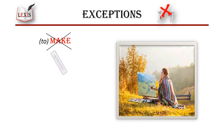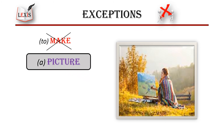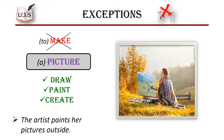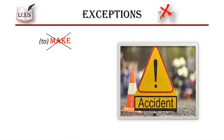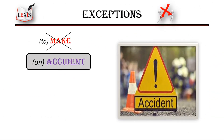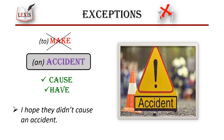To make a picture is also incorrect. We can say to draw, to paint, to create a picture, but make just doesn't make sense. To make an accident is also incorrect — it's the same story. We can use the verbs to cause or have an accident here. For example, 'I hope they didn't cause an accident.'